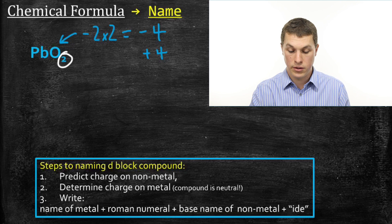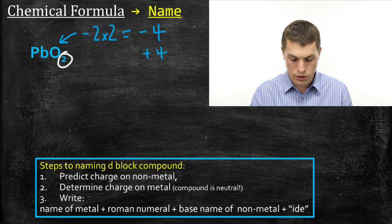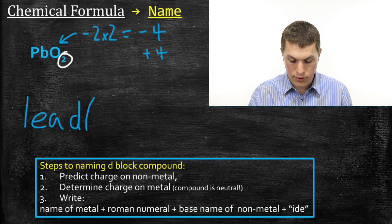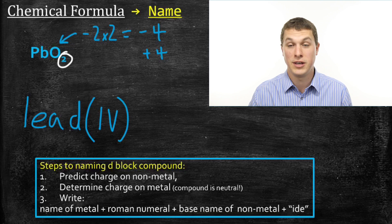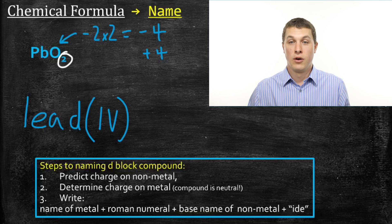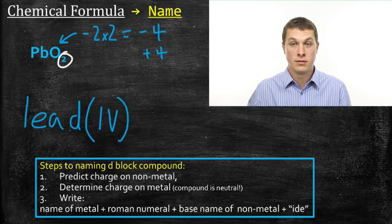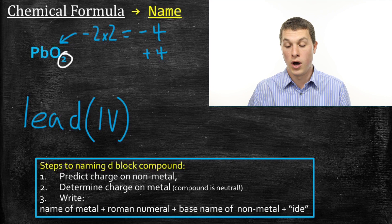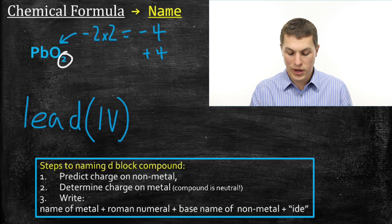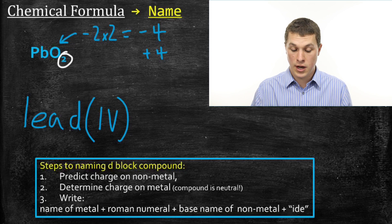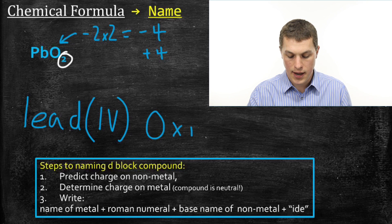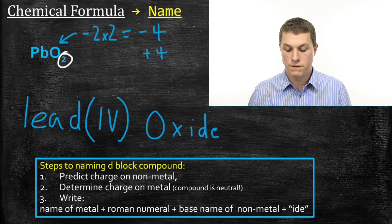Now we write down the name following the rules. The first thing is to write lead — that's what Pb is, from the periodic table. Then we write the Roman numeral for our charge in parentheses. The Roman numeral for four is IV. You need to know Roman numerals one through four: one line, two lines, three lines, and four is the unique one — a one and then a V, meaning four. So we have lead(IV). Then we add the base name of oxygen, which is ox-, and add -ide. So we get lead(IV) oxide.